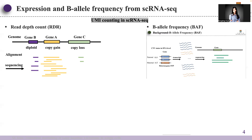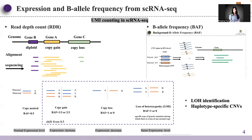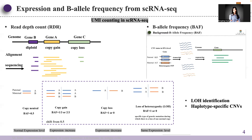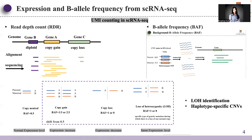Combining B allele frequency can enhance copy number variation calling in both LOH identification and haplotype-specific copy number variation detection.